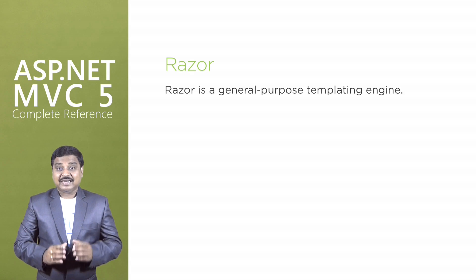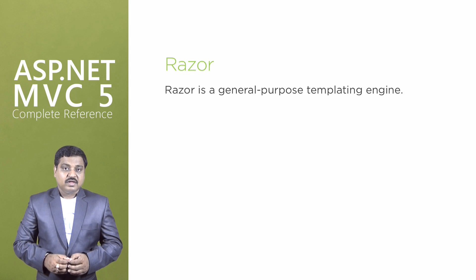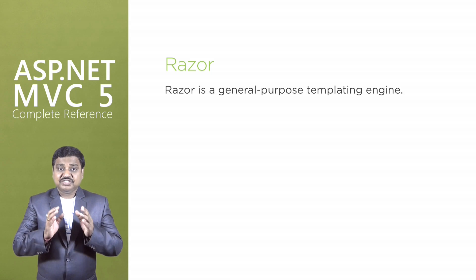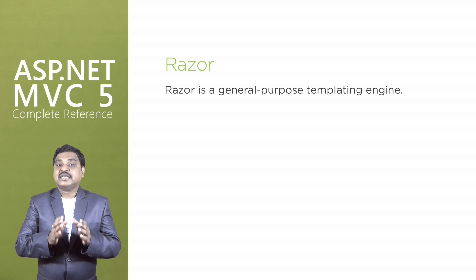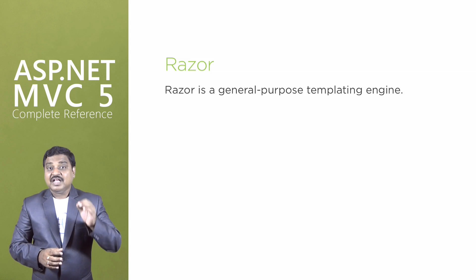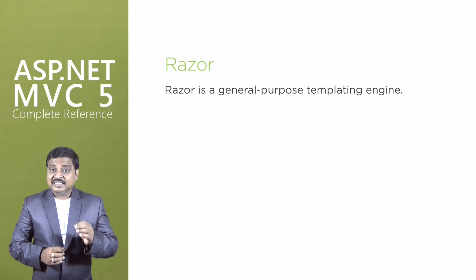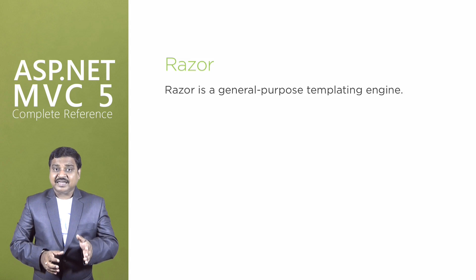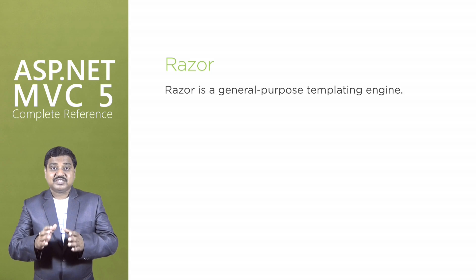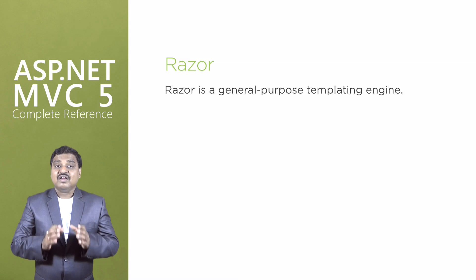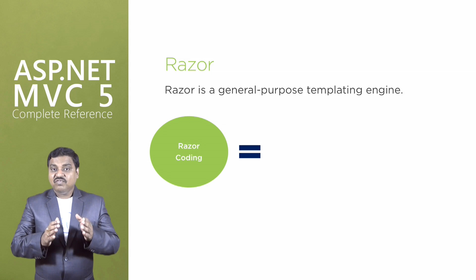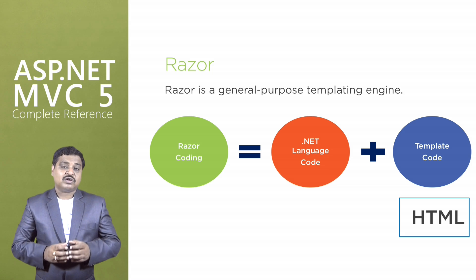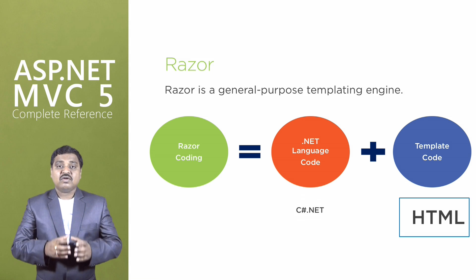Razor is a general purpose templating engine. We can use it anywhere to generate an output like HTML. It is just that ASP.NET MVC has implemented a view engine that allows us to use Razor inside of an MVC application to produce HTML. But as I said, it is a general purpose templating engine. That means we will have a template file that will be a mix of HTML code and some blocks of .NET language code such as C# or VB.NET.